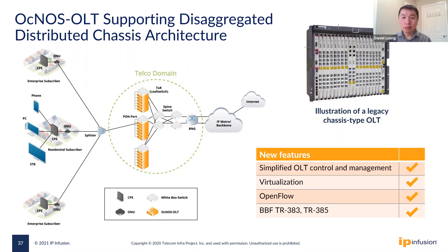But the limitation is that the line cards have to come from the same vendor, and most of the time they cannot support a new PON technology. For example, if you buy a G-PON chassis OLT, you cannot put an XGS-PON line card in it. So we approach this network scaling in a different way.